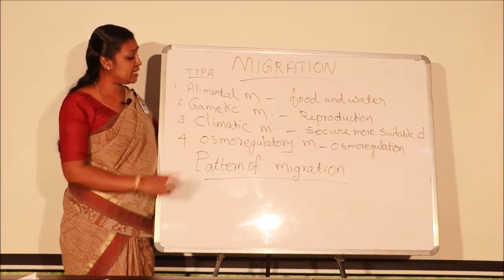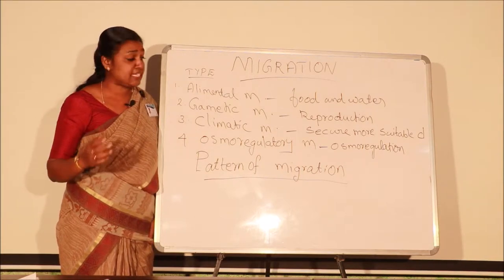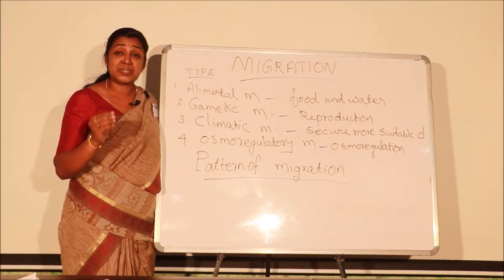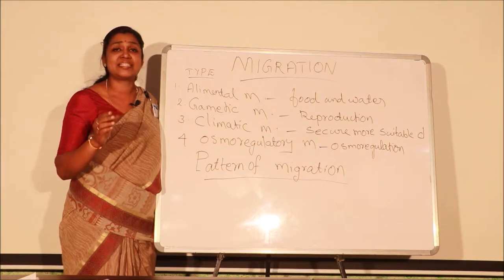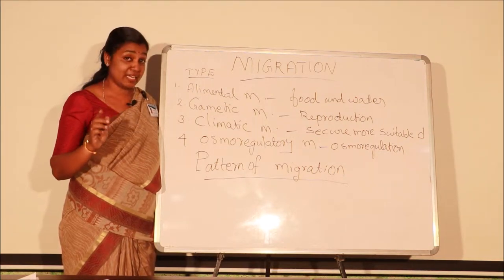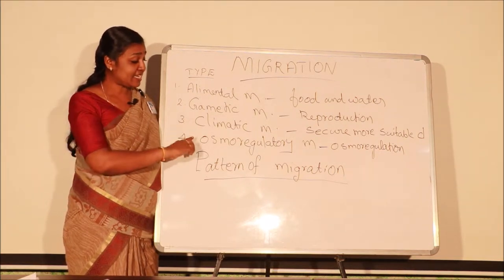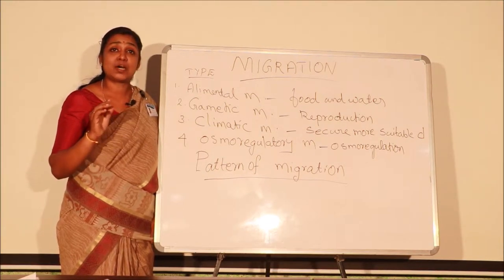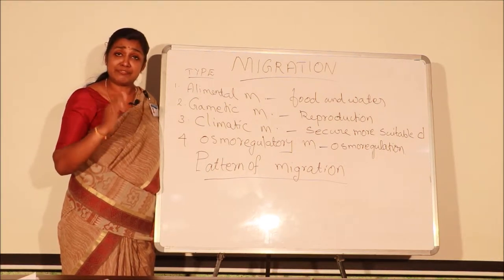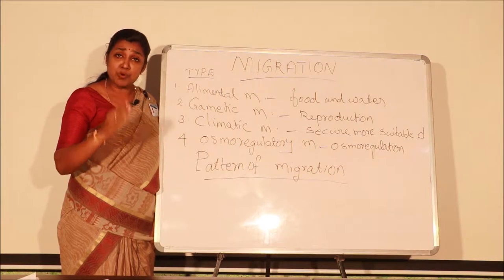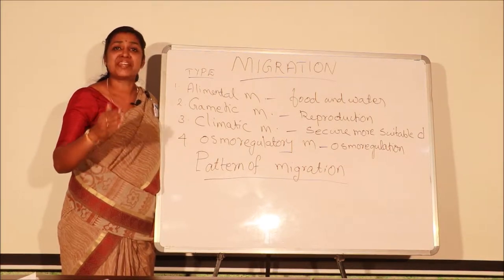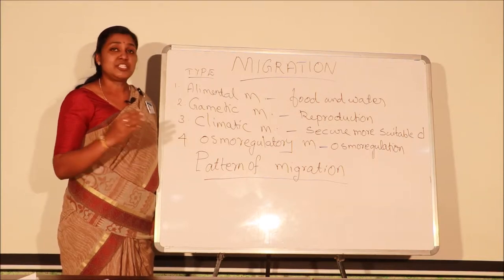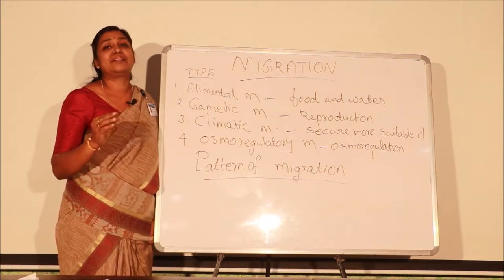The next type is climatic migration, which occurs to secure a suitable climate. And the next is osmoregulatory migration — that is, to satisfy the osmoregulatory function. The fishes are moving and migrating from one place to another for this purpose.